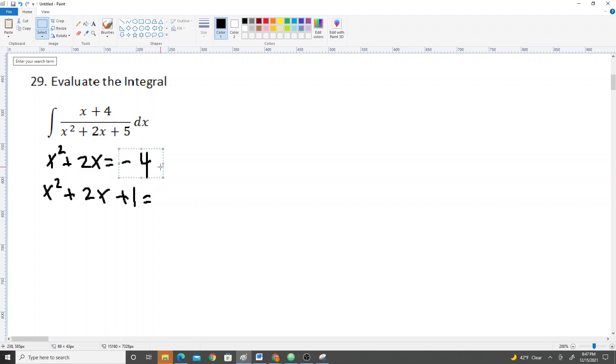It becomes 4 after you subtract, after you add 1. So right now, this is minus 5, and we add 1 to this side, add 1 to this side, then you get negative 4.